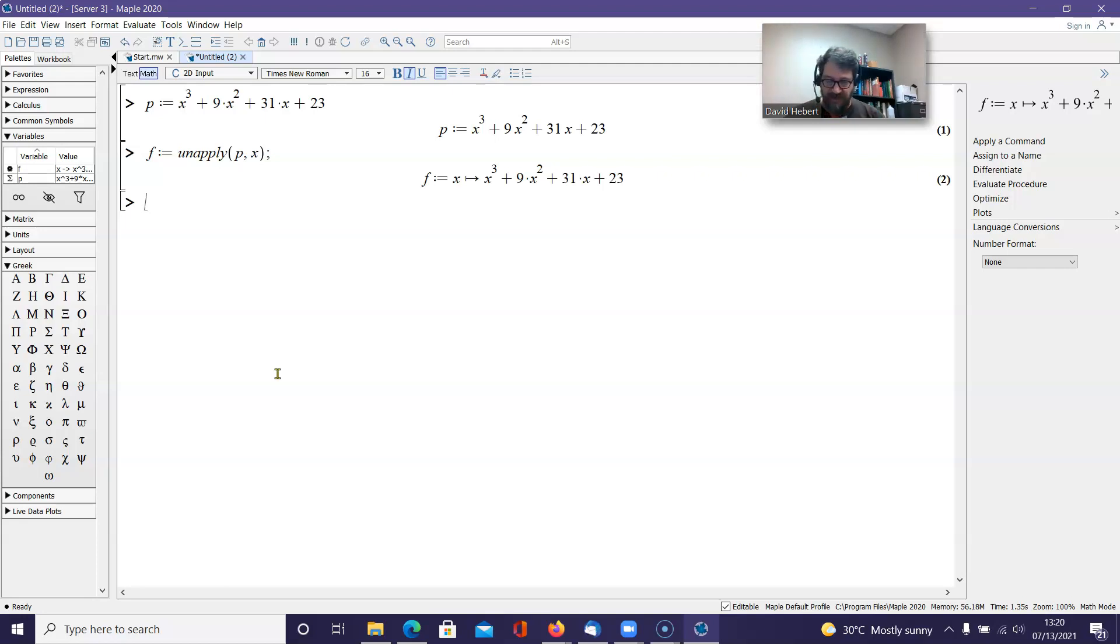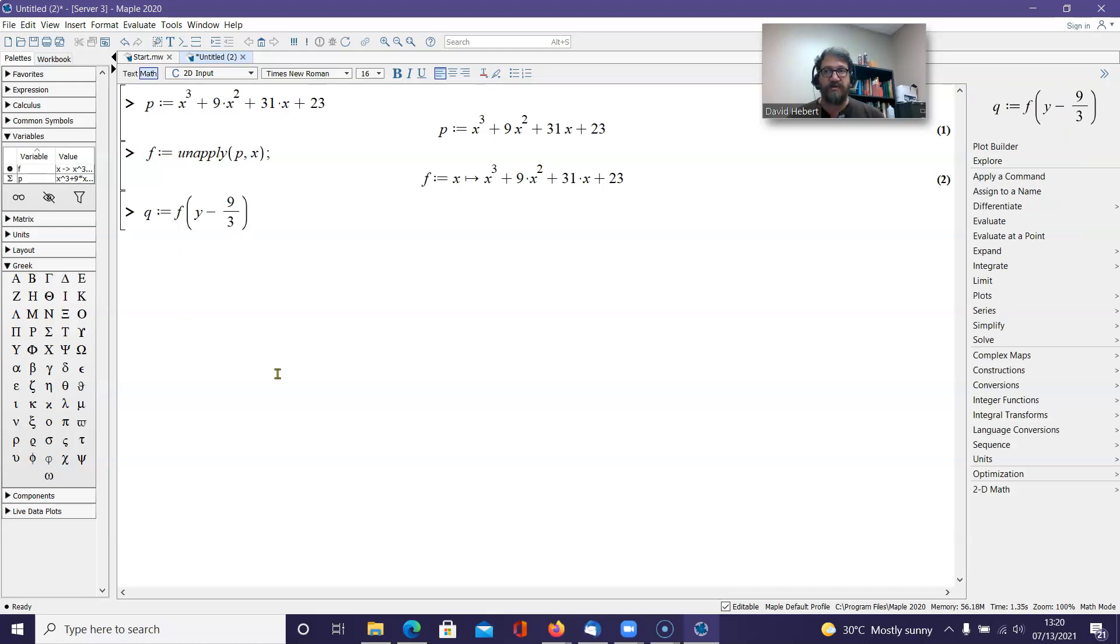What do I want to substitute into f? I want to look at a new expression. I'm going to call it q for the time being. And q is going to be equal to f, where we're replacing and saying that x is equal to y minus, and in this case it is 9 divided by 3, because we're wanting to suppress the square value.